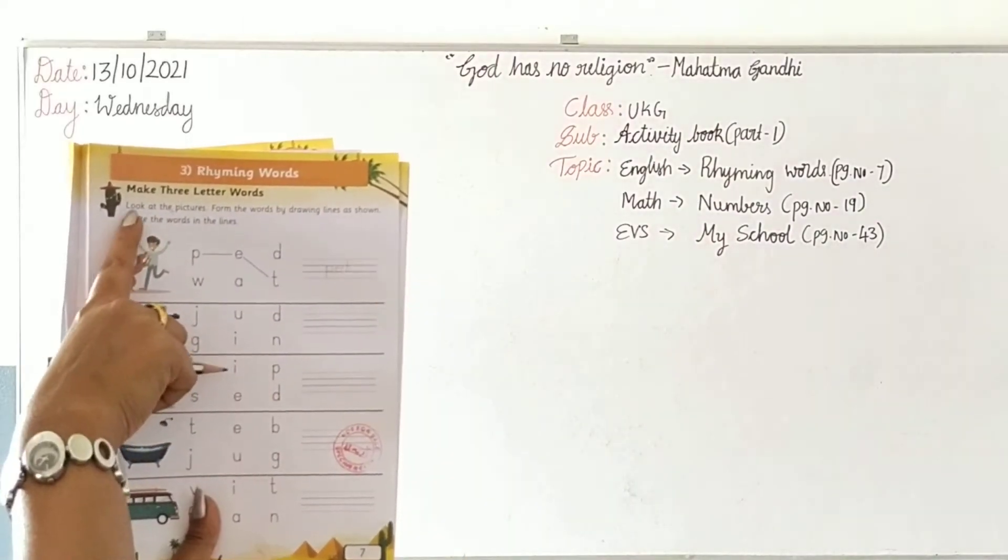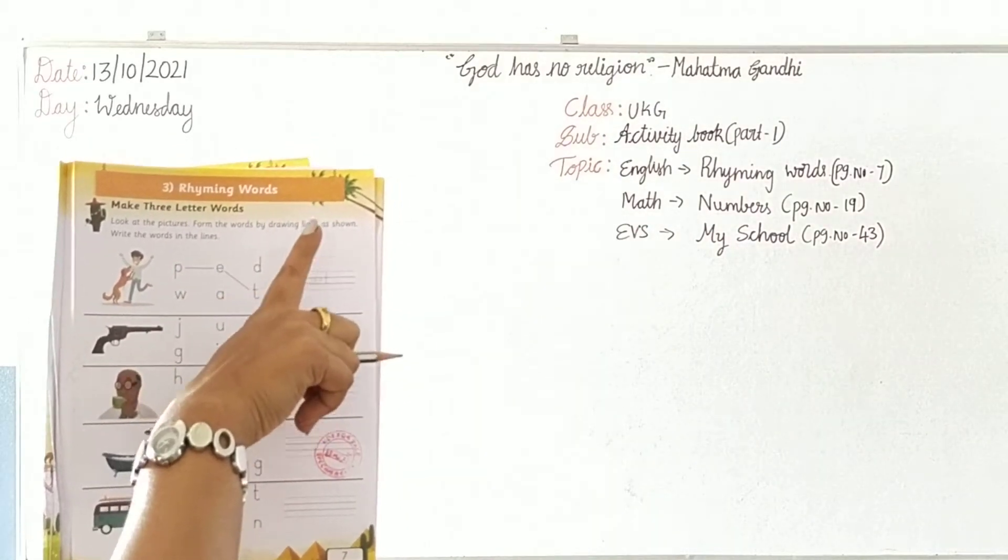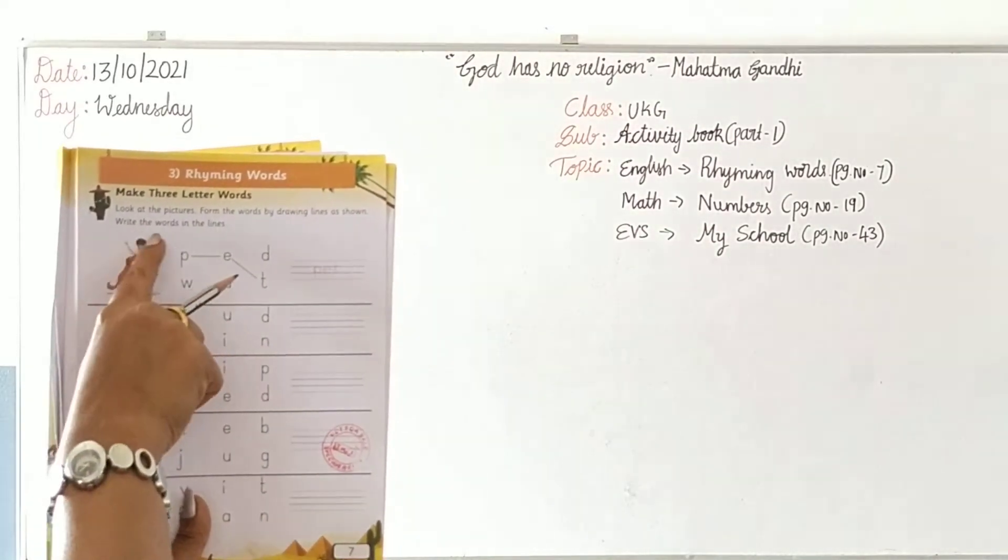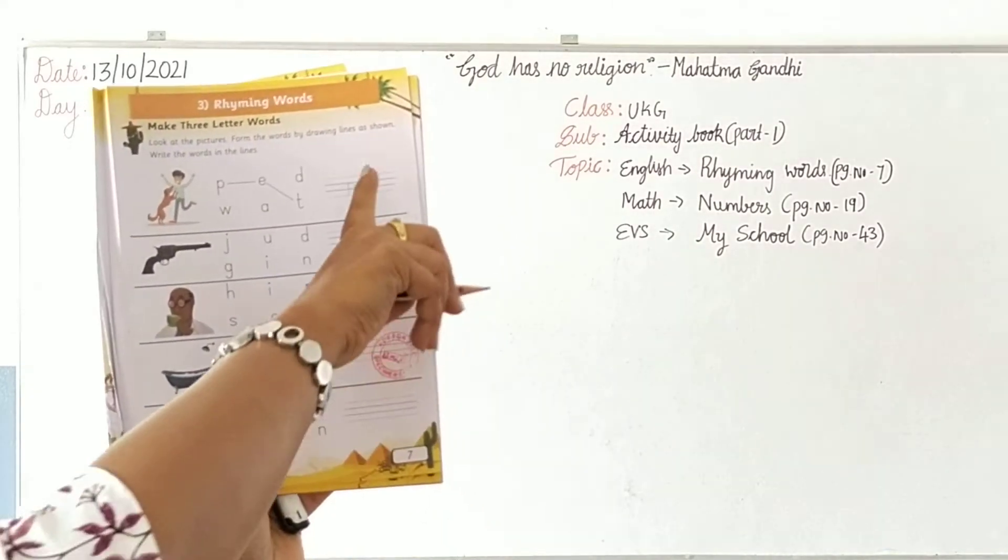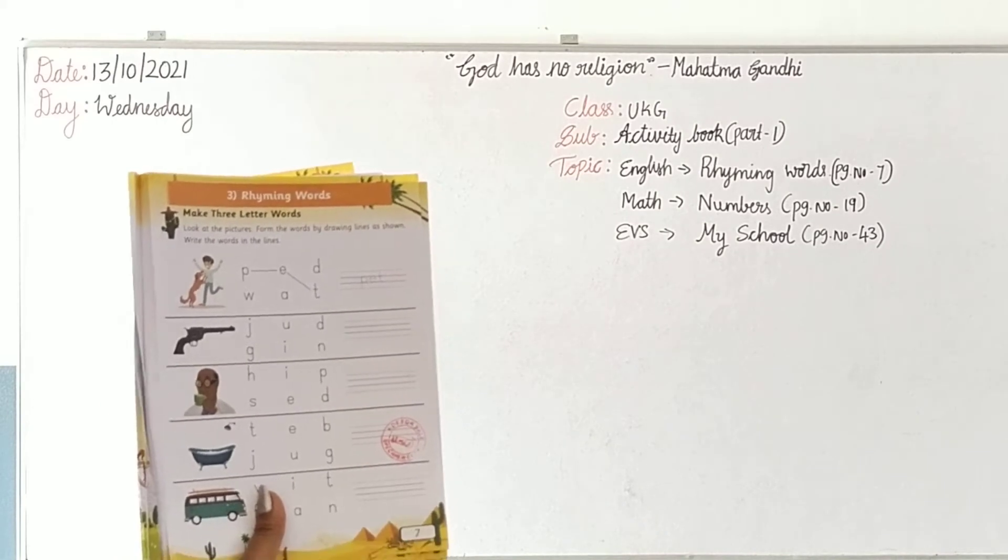Look at the pictures. Form the words by drawing lines and write the words in the lines. The lines have been given, the pictures have been given. We have to find out the rhyming word.